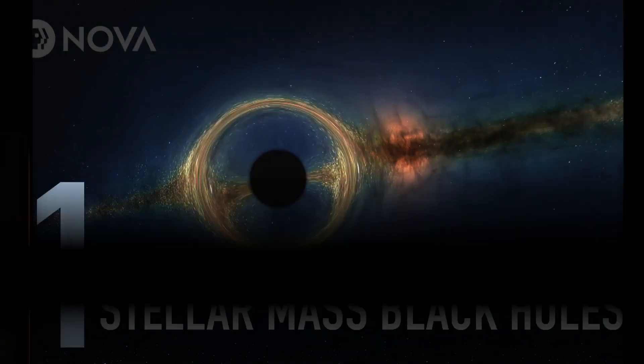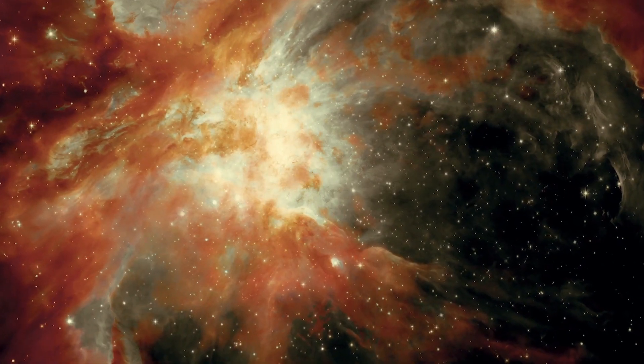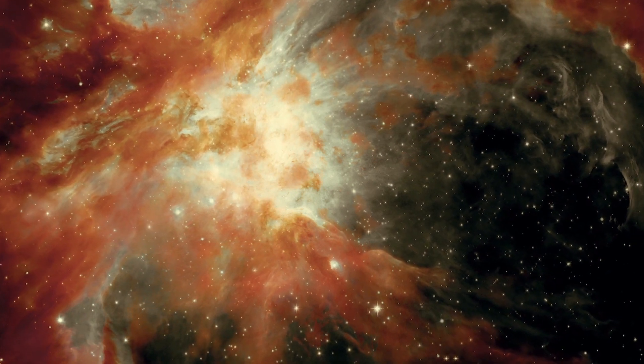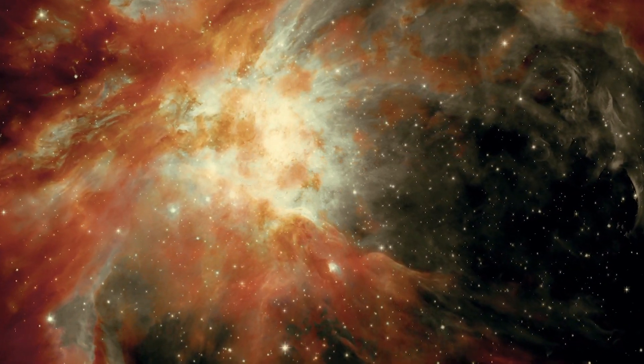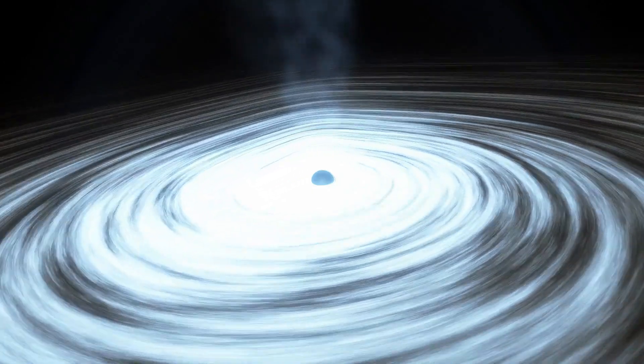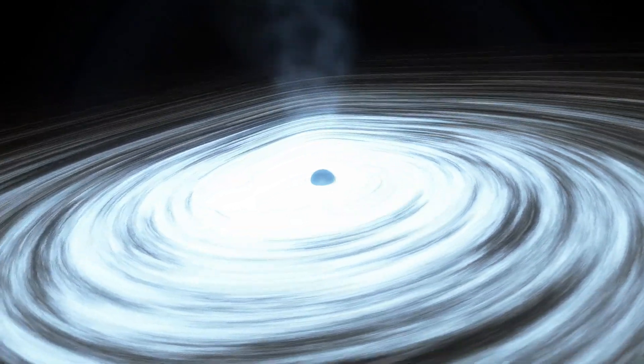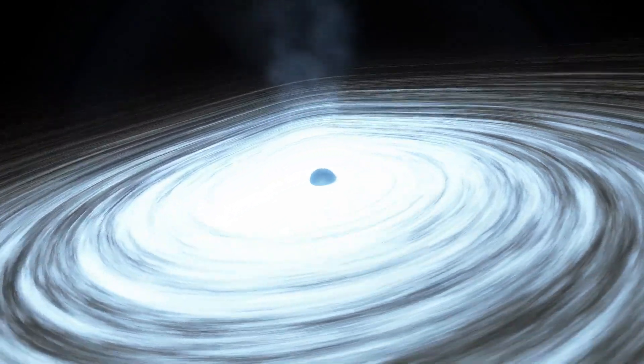Stellar black holes, the smallest among them, originating when a massive star exhausts its fuel. As the star depletes its energy source, it loses the ability to support its enormous mass and undergoes collapse. This collapse generates substantial amounts of energy and heat, resulting in the formation of a black hole.